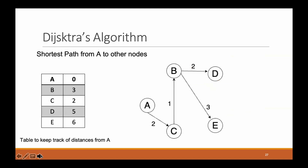Now we have visited all the nodes, and this is the shortest path to all other nodes from A. We have all the weights in the table, and if you look at the graph it is showing the shortest path to all nodes from the starting node A. That is Dijkstra's algorithm.